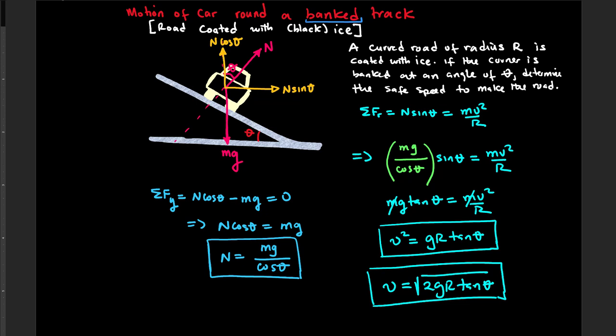We proved that the critical speed the car must have in order to go around the circular track and not skid outwards nor inwards is given by VC equal to the square root of gr·tan θ. And tan θ is equal to v² over gr.